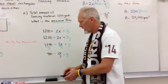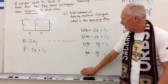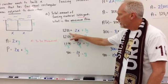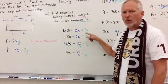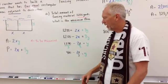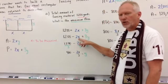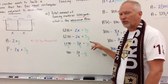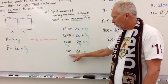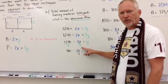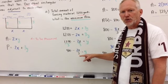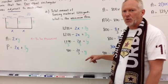The first step is to plug in and start working. We have 1,200 equals 2x plus 3y — 1,200 is our perimeter, that's how much fencing we have. We subtract 2x to get 1,200 minus 2x equals 3y. Then we divide by 3: 1,200 divided by 3 is 400, minus 2x over 3, equals y. So y equals 400 minus 2x divided by 3.